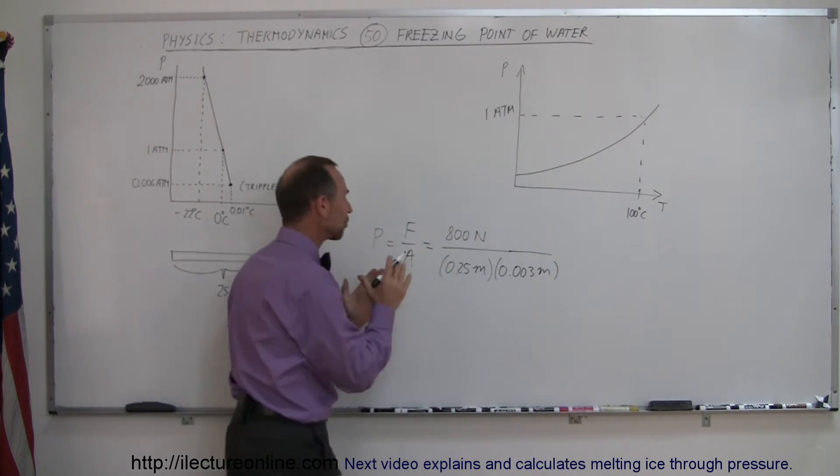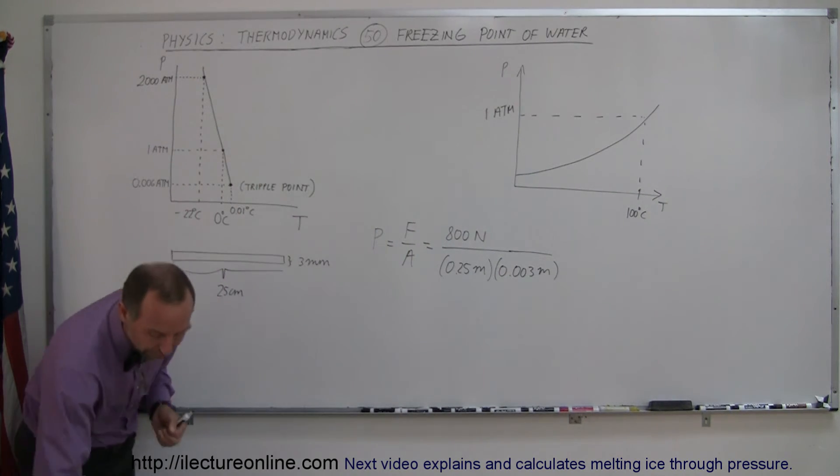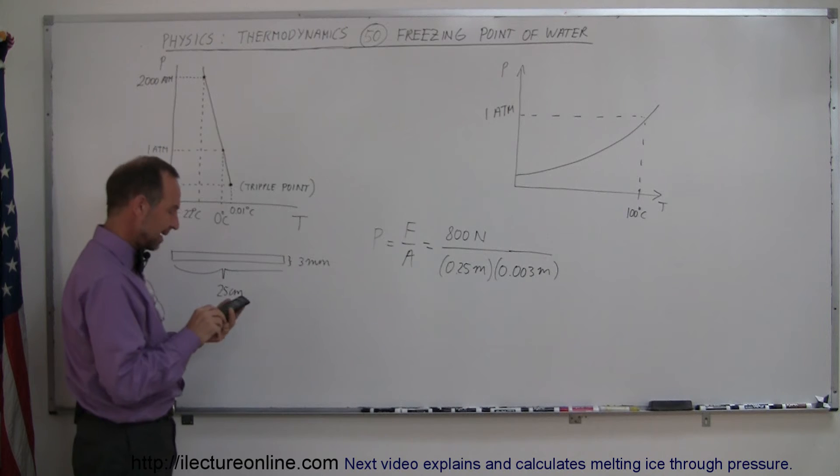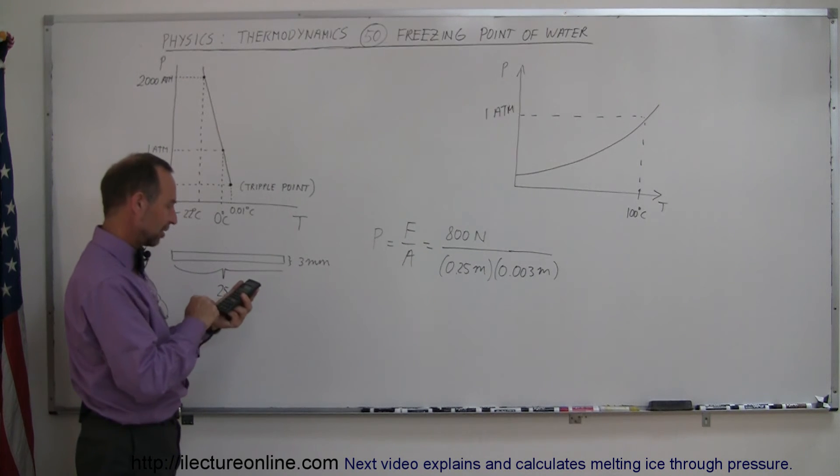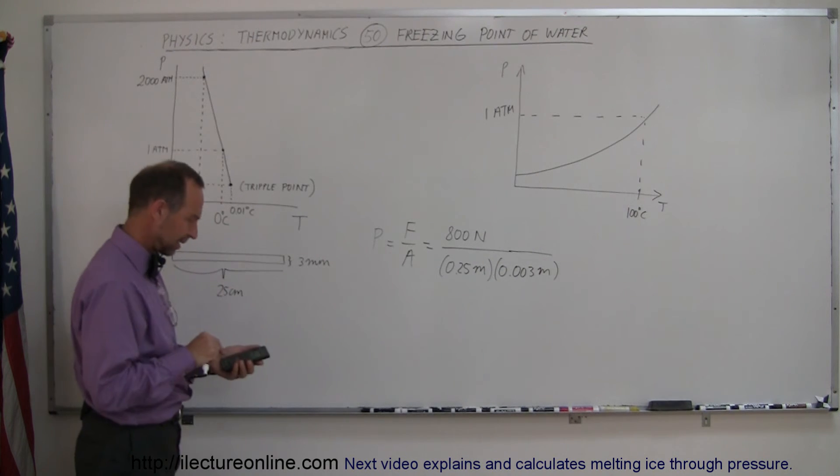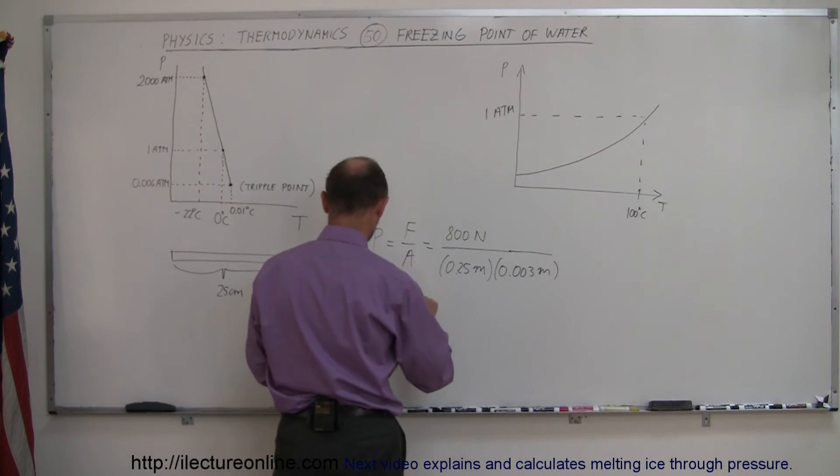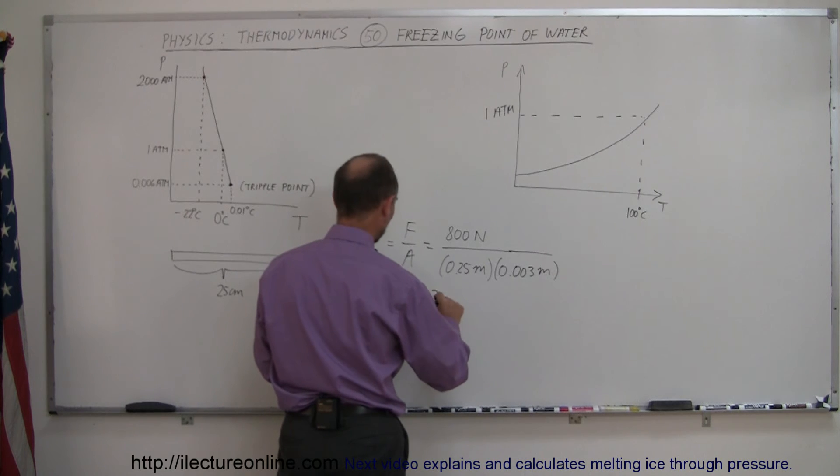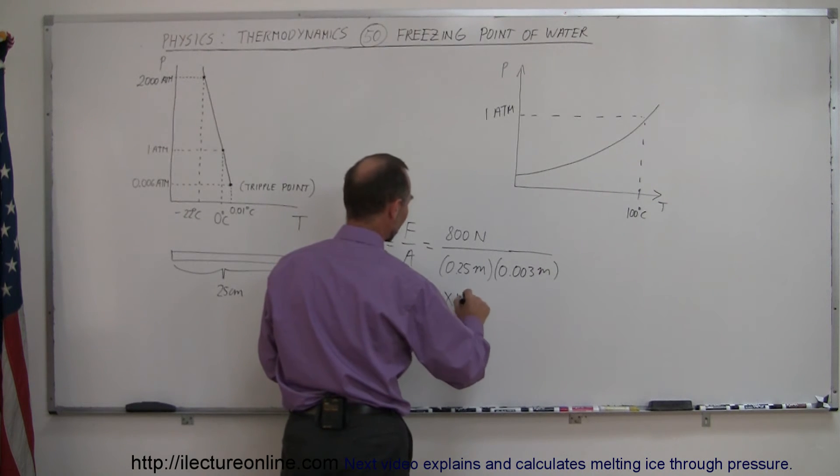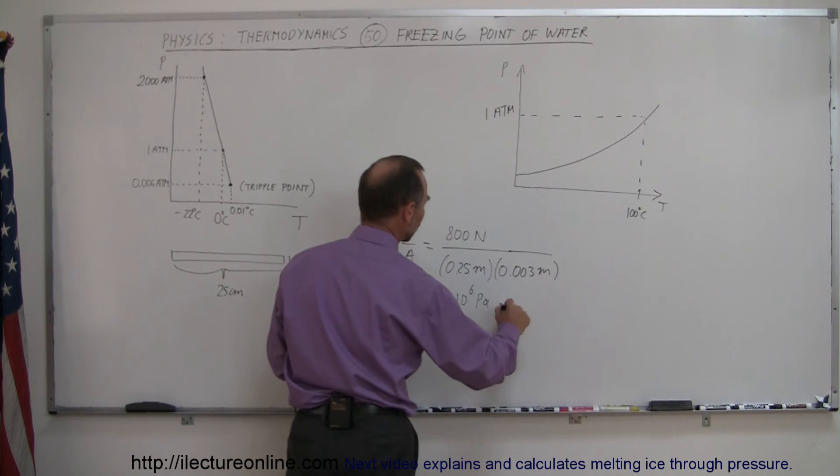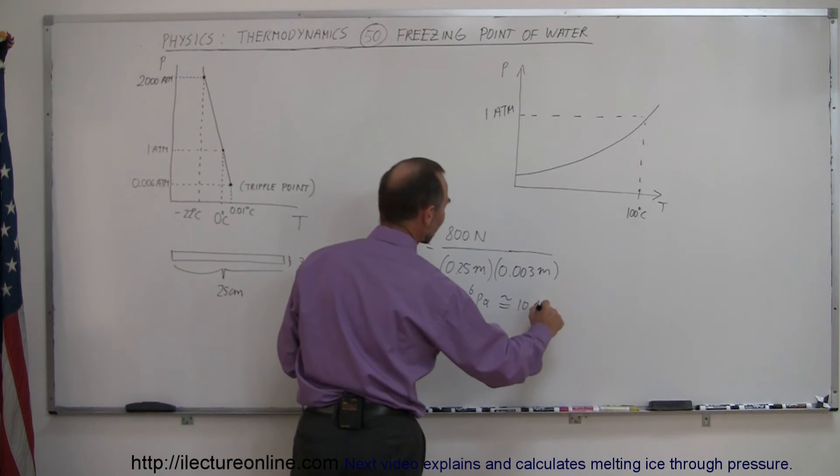And so that will give us the pressure caused by the ice skate on the ice. So we have 800 divided by 0.25 divided by 0.003 equals, there it is. So the pressure would be about 1.07 times 10 to the 6th pascals, which is roughly equal to about 10 atmospheres.